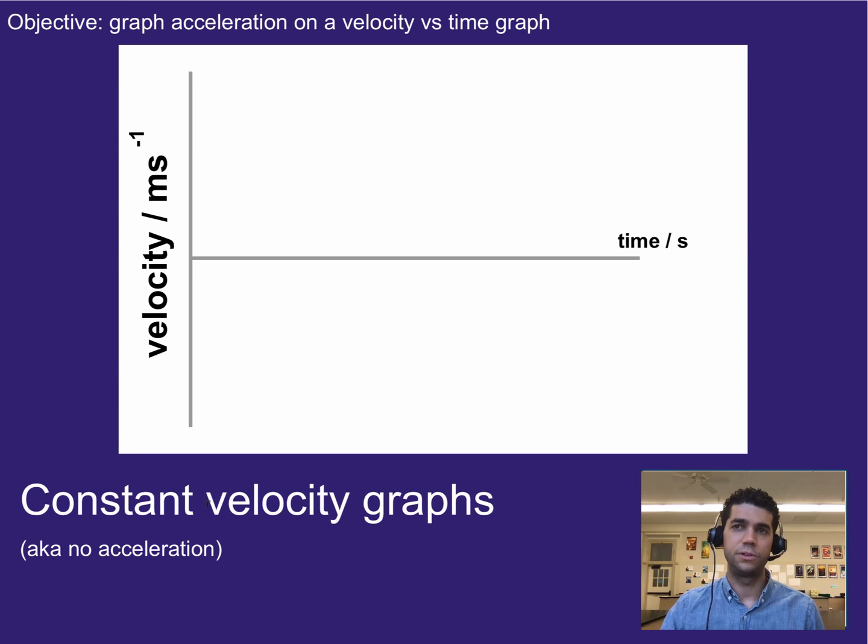Before we get started with looking at changes in velocity on a velocity time graph for acceleration, we're going to start with what does constant velocity look like? We've talked about it before but it doesn't hurt to refresh. So constant velocity, aka no acceleration.